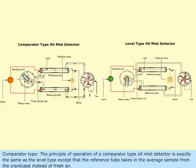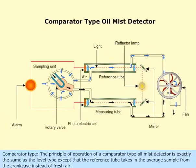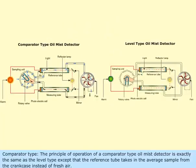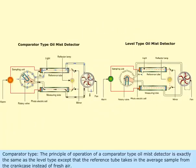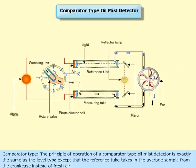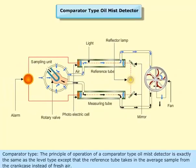Comparator type. The principle of operation of a comparator type oil mist detector is exactly the same as the level type, except that the reference tube takes in the average sample from the crankcase instead of fresh air.